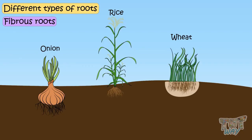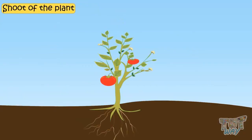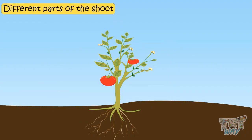Now let's learn about the shoot of the plant. Part of the plant that grows above the ground is called shoot. Now let's see different parts of the shoot.